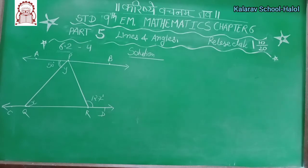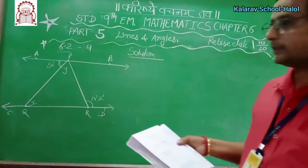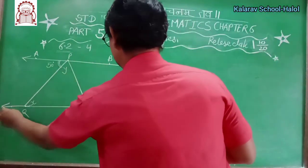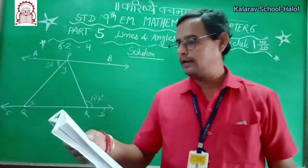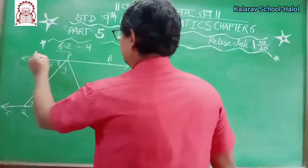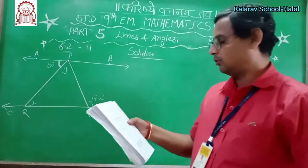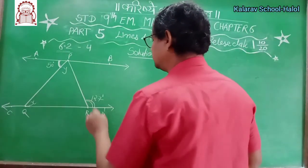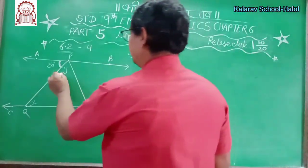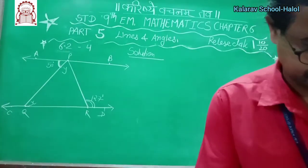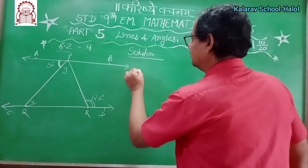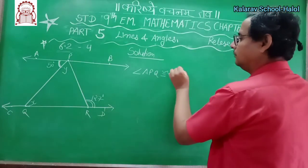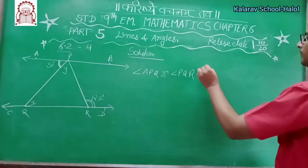Now see children, this is the last sum of this exercise. Here again it is saying AB is parallel to CD. Angle APQ is 50 degrees and angle PRD is 127 degrees. You have to find X and Y — it is very easy. Angle APQ is congruent to angle PQR. The reason is alternate angles.